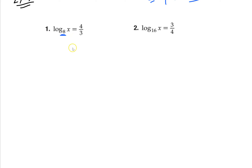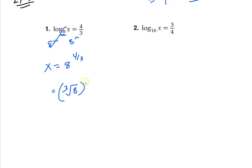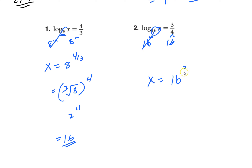Here's your base: 8. So let's take 8 to both sides. These cancel. You get x equals 8 to the 4 thirds. That's going to be the cube root of 8 to the 4th, which is 2 to the 4th, which is going to be 16. On to this one — same thing. There's the base. Take that of both sides. x equals 16 to the 3 fourths. Do the 4th root of 16, which is 2. 2 to the 3rd is 8.